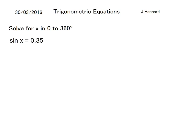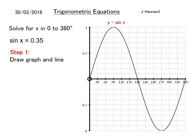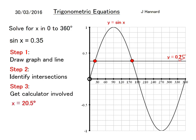Here's another question: solve for x in 0 to 360, sin x equals 0.35. Step 1, draw your graph, sine graph this time, and the line y equals 0.35. Identify your intersection points. If we get our calculator involved, we get x equals 20.5 here. If you notice, the distance from 0 to that answer is the same as the distance from 180 to that answer there. That means we do 180 minus that answer to get the other one, which means it'll be 159.5 degrees.